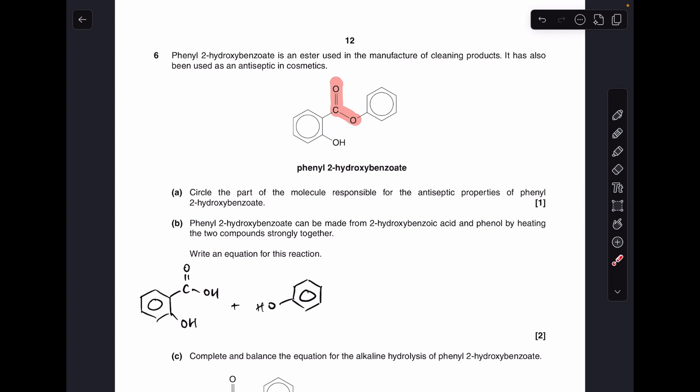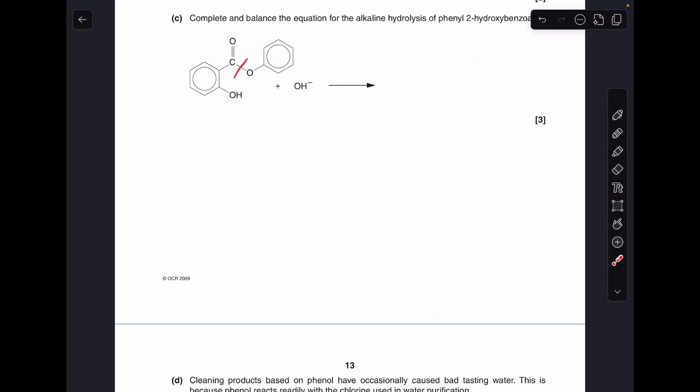This part here is made from phenol. So if you've gone for the carboxylic acid version, there's your equation. If you've gone for the acyl chloride version, there's your equation. So moving on to part C.